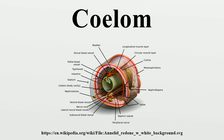The fluid inside the coelom is known as coelomic fluid. It is circulated by mesothelial cilia or by contraction of muscles in the body wall. The coelomic fluid serves several functions: it acts as a hydroskeleton, allows free movement and growth of internal organs, serves for transport of gases, nutrients, and waste products between different parts of the body, allows storage of sperm and eggs during maturation, and acts as a reservoir for waste.